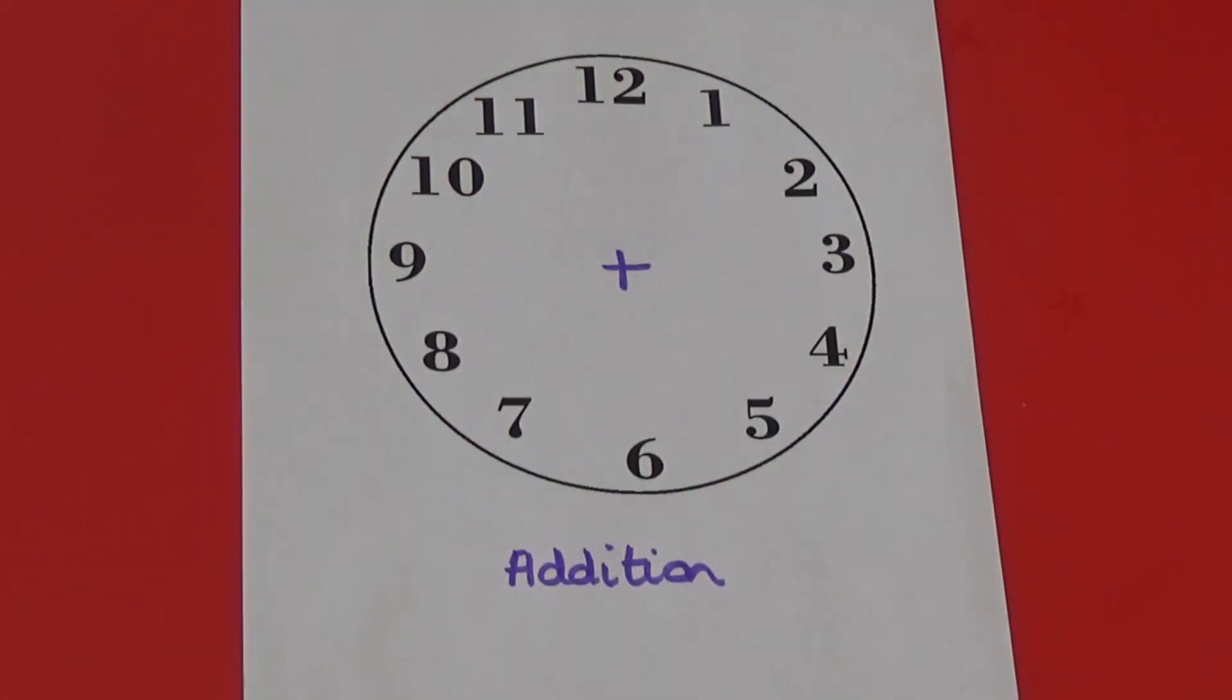This time I'm going to show you another addition one. If you add the numbers diagonally they all add up to thirteen.